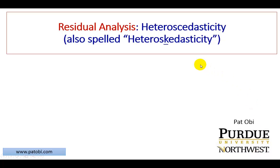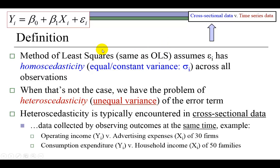This presentation is on heteroscedasticity, which can be spelled either with a C or a K. As you know, the method of least squares, also referred to as the ordinary least squares method or OLS, assumes that the error term in the regression model is homoscedastic, meaning that it has equal or constant variance across all observations. When that's not the case, we have the problem of heteroscedasticity, which is a problem of unequal variance of the error term.